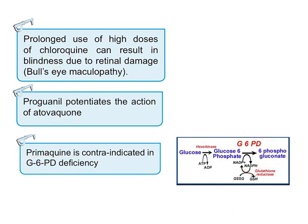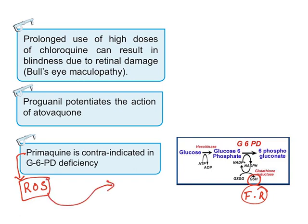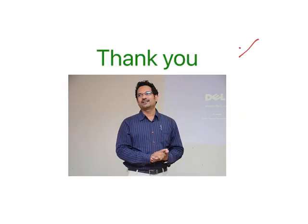In people with G6PD deficiency, there is reduced formation of glutathione, meaning free radicals cannot be removed efficiently. Since primaquine's mechanism of action involves generating reactive oxygen species (free radicals), these radicals can attack the patient's own red blood cells. This is why primaquine should not be used in patients with G6PD deficiency. That concludes the topic of anti-malarial drugs.